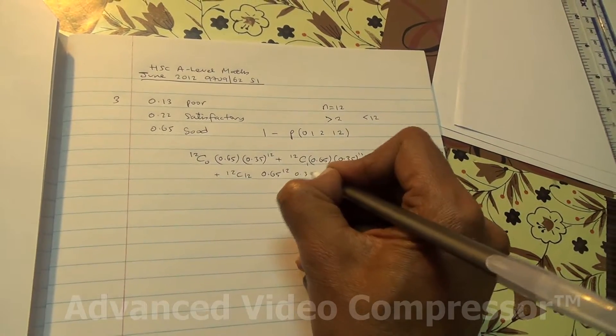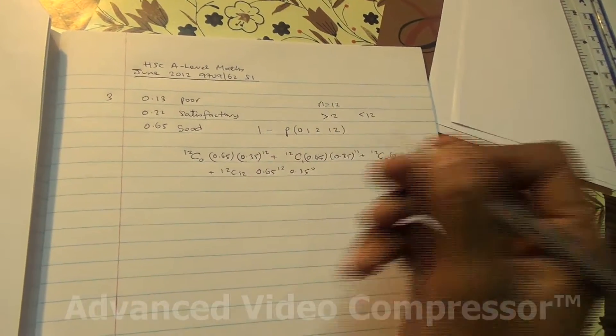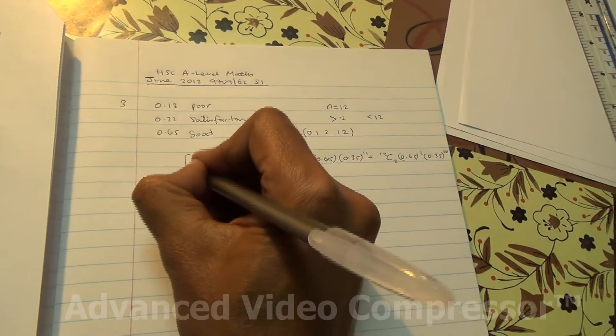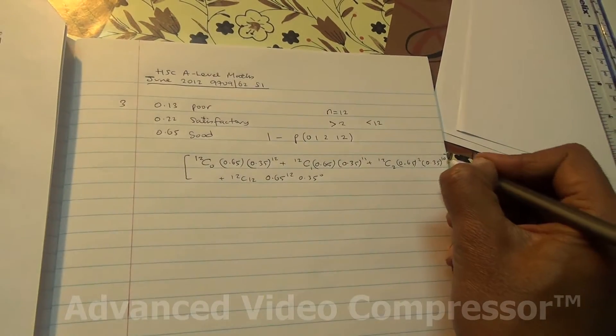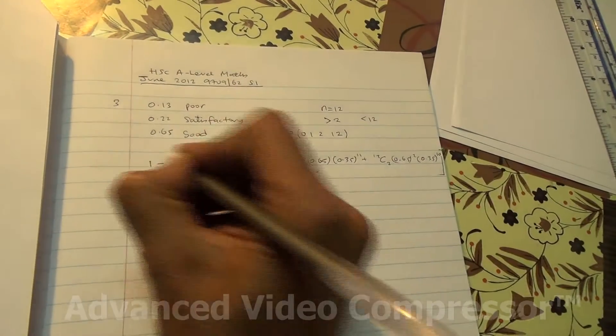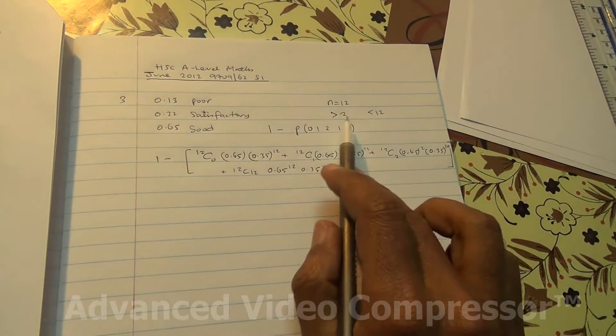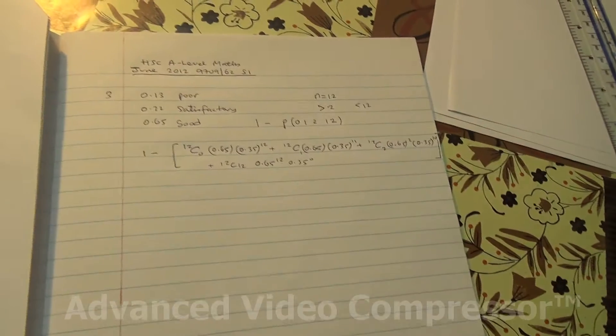and then times 0.35 to the power of 0, 12 minus 12 is 0. So we're going to take all of that, add them up, and then take 1 minus all of that to be able to get between 2 and 12. So let's work it out.